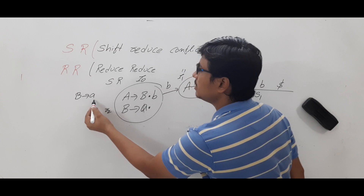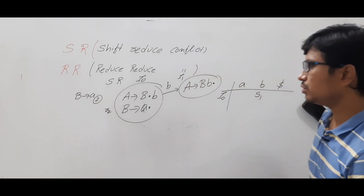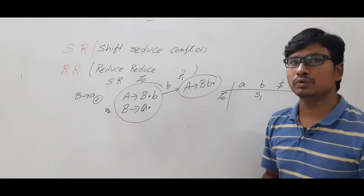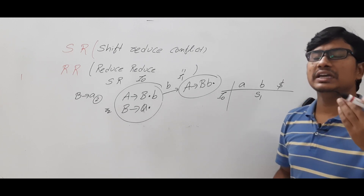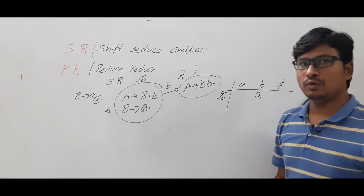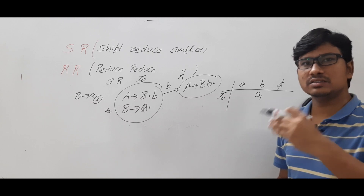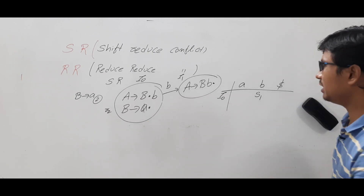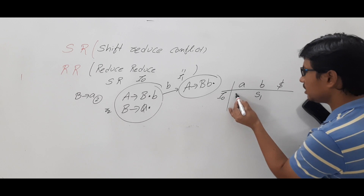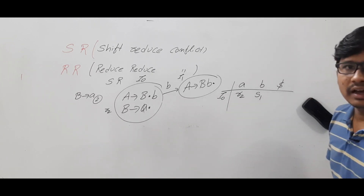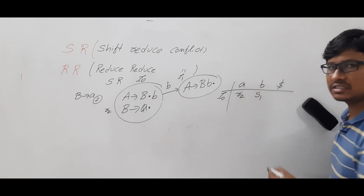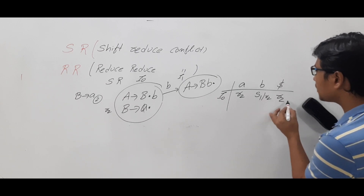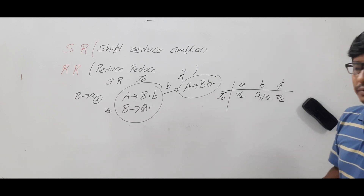In the LR0 parsing table, a reduce move is written across the entire action part — meaning under all terminals we write r2. So for I0 under b, we already have S1 (shift), and now we also write r2 (reduce) — giving us two entries in the same cell.